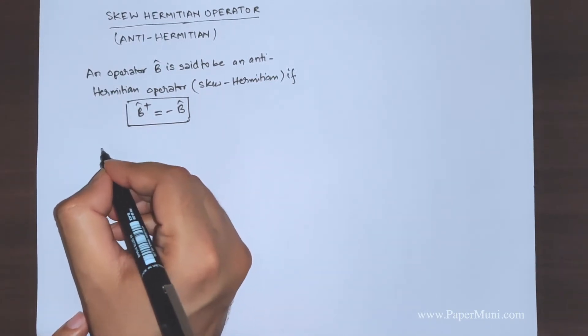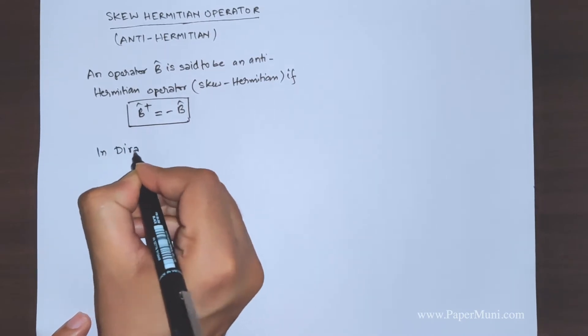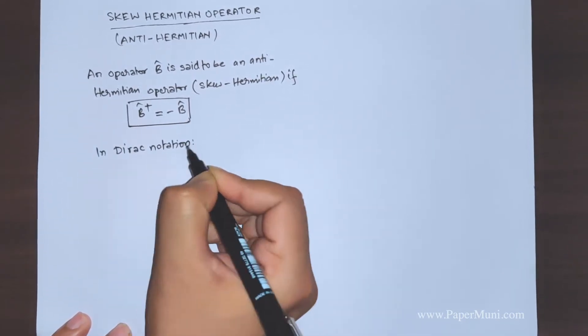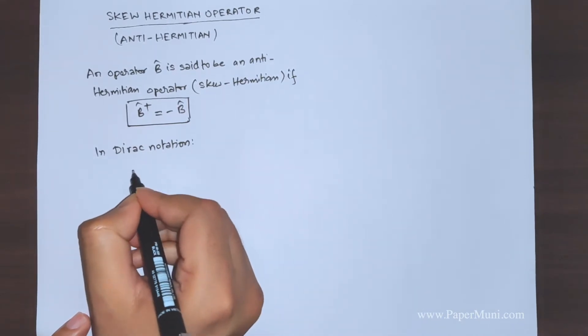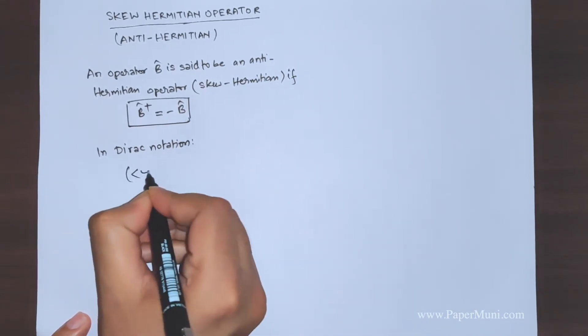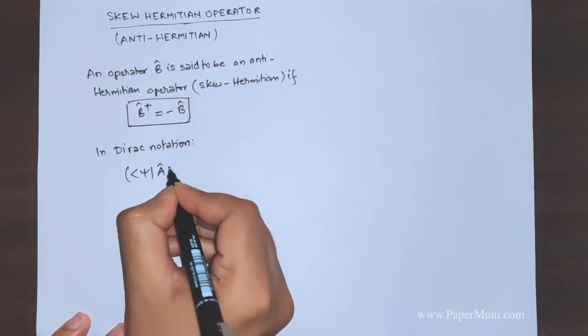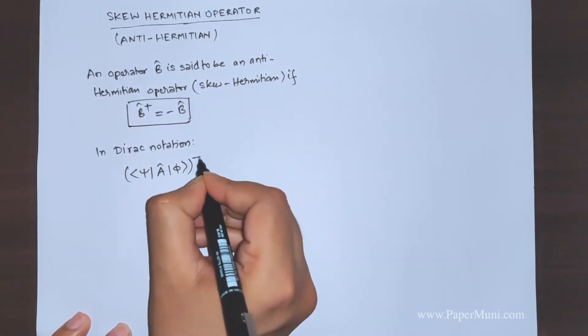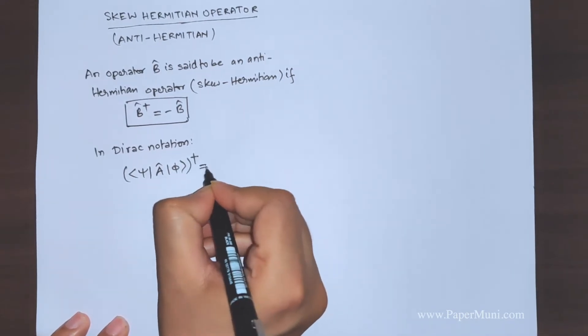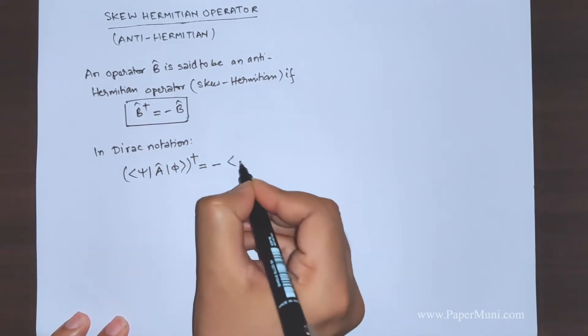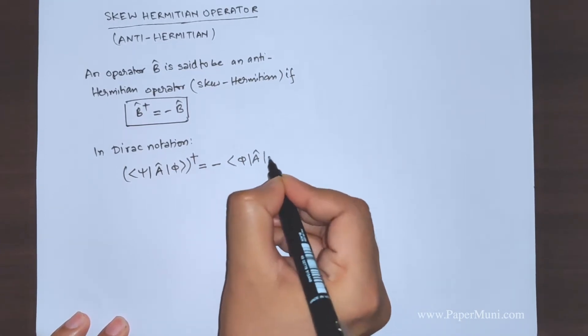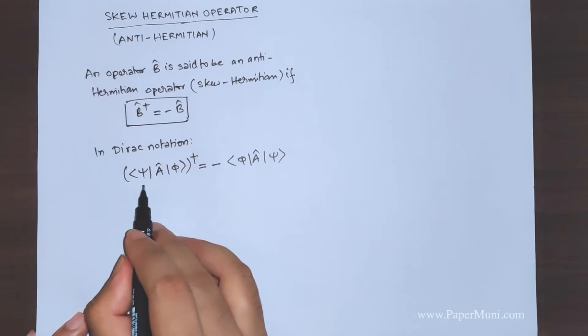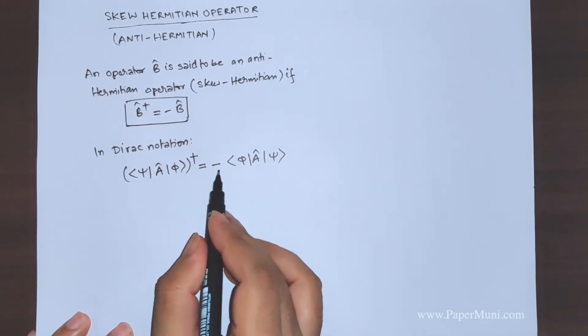In Dirac notation this condition can be written as we make a sandwich between two wave functions of the operator A. Taking a dagger should give you minus phi A psi. The positions are interchanged with a negative sign.